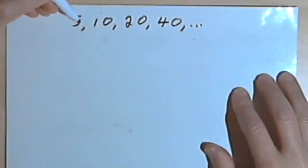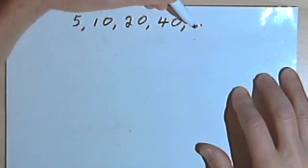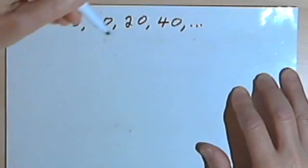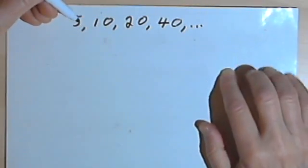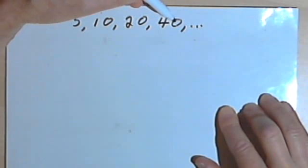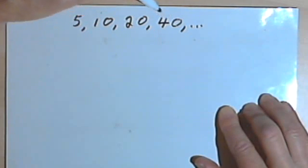Here I've got this number sequence: 5, 10, 20, 40, and then the ellipsis, the three dots that mean the sequence keeps going. Looking at it, I realize it's a geometric sequence because I keep getting a new term by multiplying the previous term by the same number.